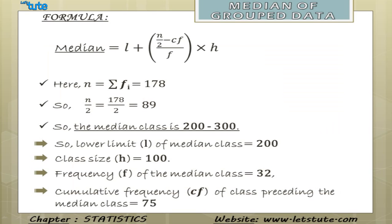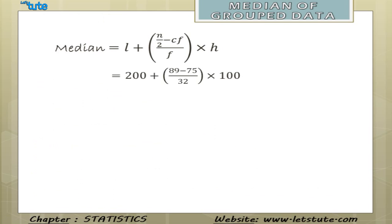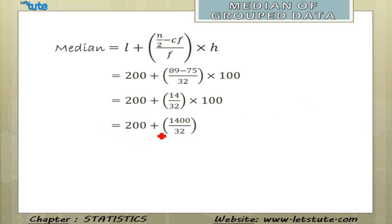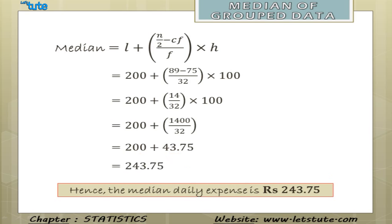Now we apply the median formula: Median = L + (N/2 − CF) / F × H. Substituting the values: 200 + (89 − 75) / 32 × 100. This gives 200 + 14/32 × 100, which is 200 + 1400/32. The ratio 1400/32 equals 43.75, and adding 200 gives 243.75. Hence the median daily expense is 243.75 rupees.